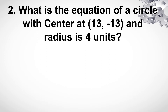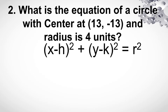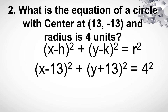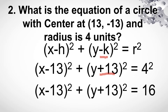Problem number 2. What is the equation of a circle with center at (13, -13) and the radius is 4 units? So substitute natin yung h and k doon sa ating formula. And then it's going to be x minus 13 plus y minus minus 13 is equal to 4 squared. So paano ito naging positive? Kasi y minus minus 13 yan — negative times negative magiging positive. So it will give us the equation x minus 13 squared plus y plus 13 squared is equal to 16.